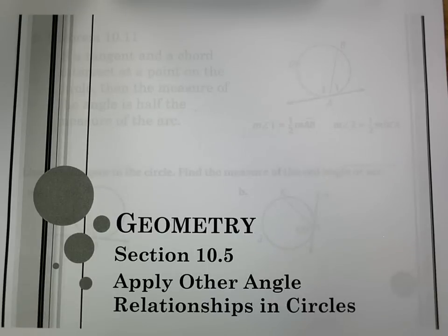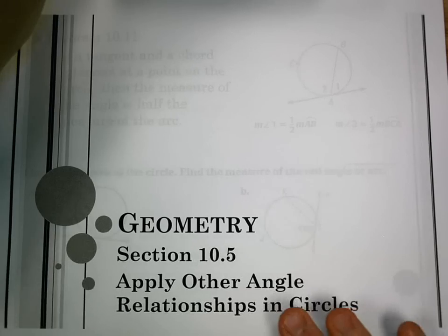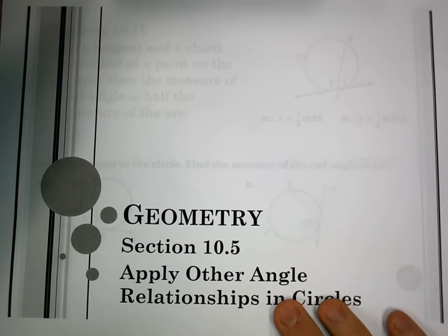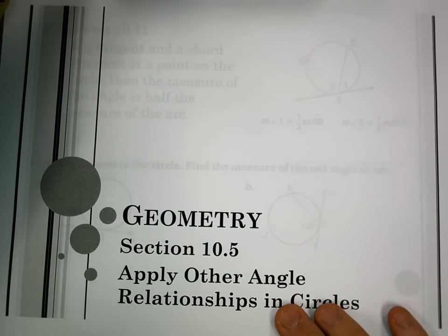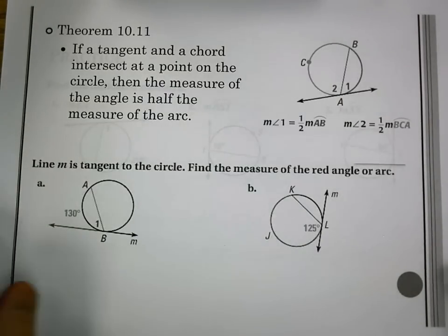For section 10.5, it's titled Apply Other Angle Relationships in Circles. We've now talked about central angles and their arc relationships thus far. These are going to be other relationships that exist within circles. So we really have three different types we're looking at.